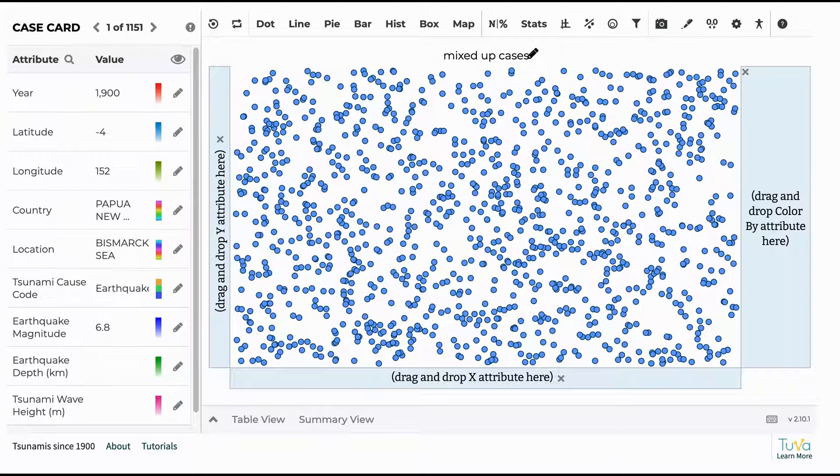Lesson 2 of the Tsunami unit has students working with tsunami data using the TUVA Labs interface. Depending on how well prepared your students are to work with data, some students may be able to do this independently, but likely, especially if you're teaching this in sixth grade, the students are going to need a bit of assistance, at least with the first graph.